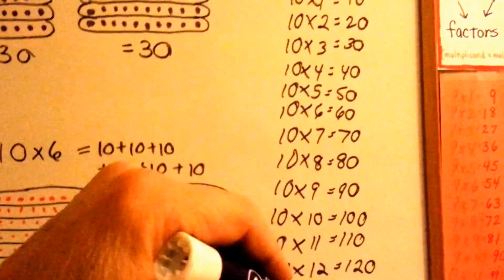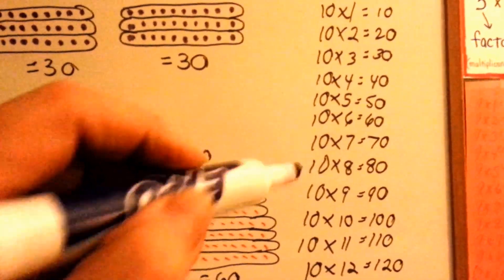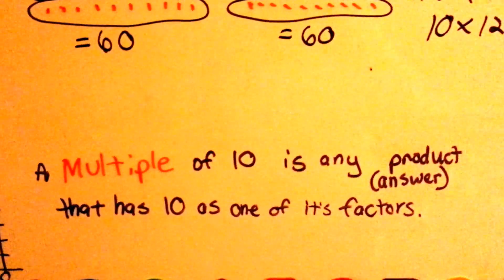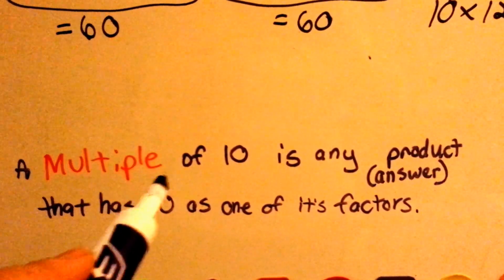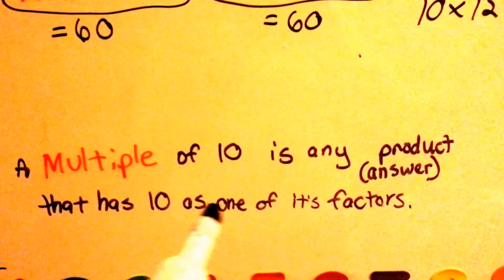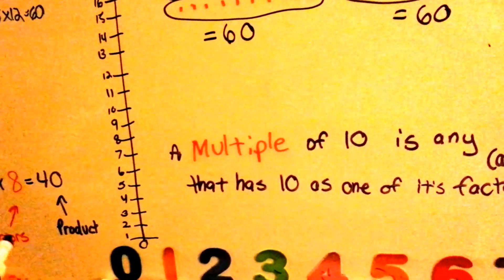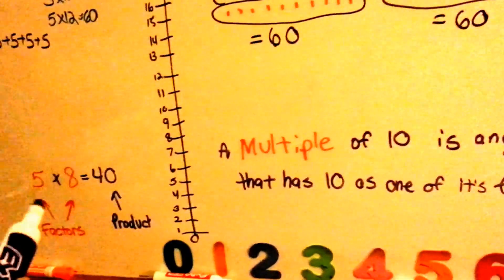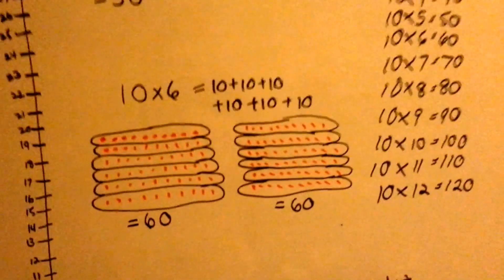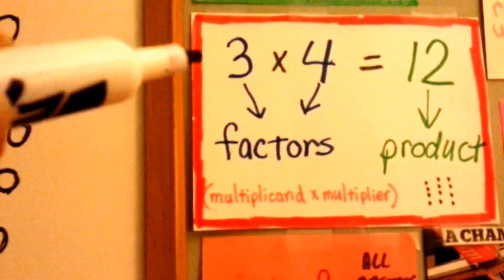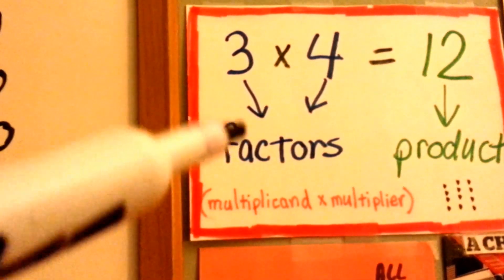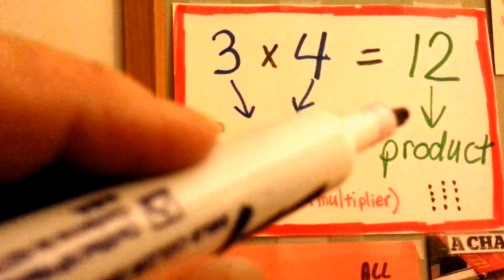Try to memorize these too so that if someone says what's 10 times 8, you can say 80 really quick. Being good at your times table will save you time when you're doing math in class or with homework. A multiple of 10 is any product that has 10 as one of its factors. A factor is the number that you multiply together. Look at my little sign right here — these are the factors and that's the product. These can also be called the multiplicand and the multiplier, but most people call them the factors and the product. The product is the answer.